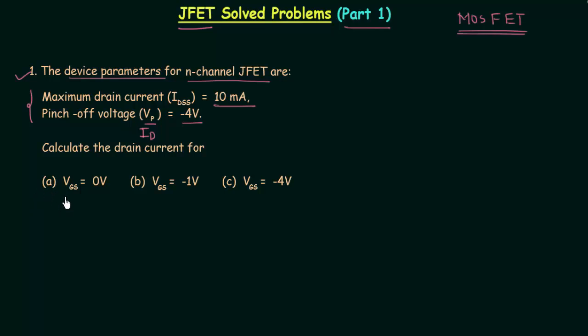In case A, voltage VGS is equal to 0V. VGS is gate-to-source voltage or the control voltage. In case B, VGS is equal to -1V. In case C, VGS is equal to -4V, which is also the pinch-off voltage. So VGS in case C is equal to the pinch-off voltage.